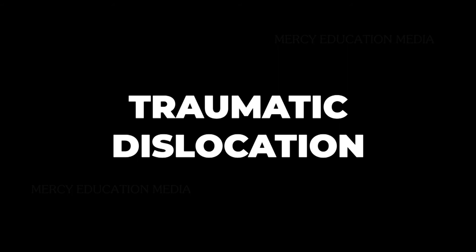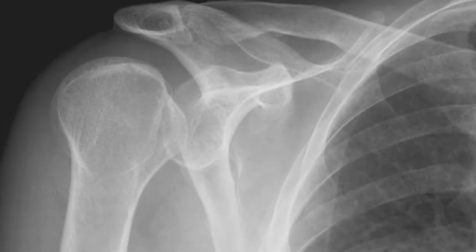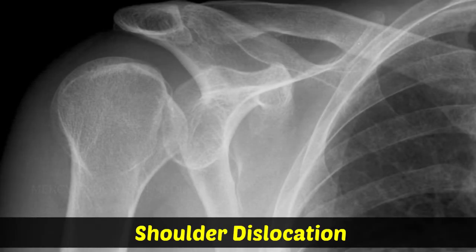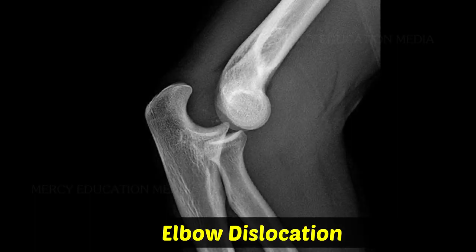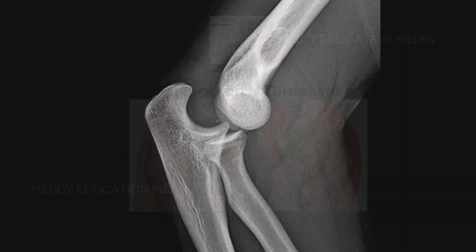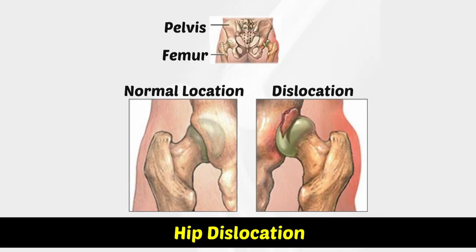What is traumatic dislocation? Traumatic dislocation is due to a serious violence. It occurs in the shoulder, elbow, and hip.